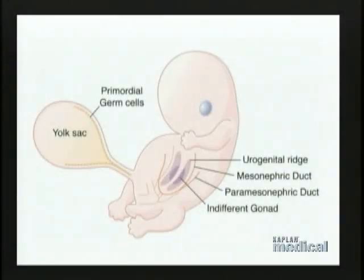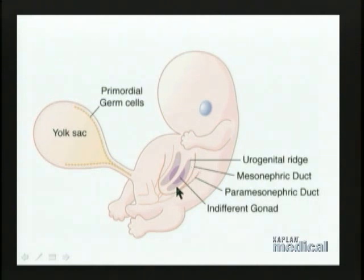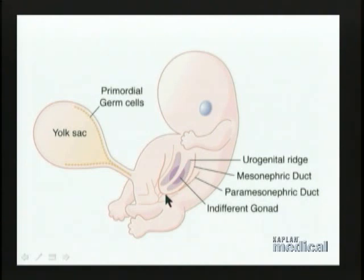Let's turn to the development of the kidney and return to this image that we looked at at the very beginning of our discussion when we were talking about the formation of germ cells in the gonad. We pointed out that in the early embryo, there is a ridge of mesoderm on the posterior abdominal wall — a very long ridge called the urogenital ridge. Part of that urogenital ridge becomes the gonad, and the remainder, the much larger portion, has to do with the development of the urinary system and the kidney.